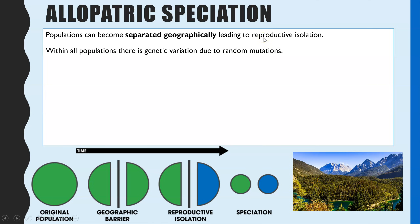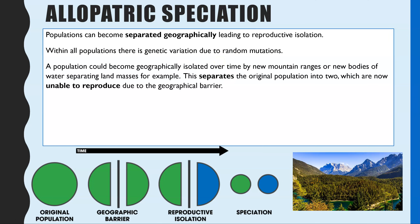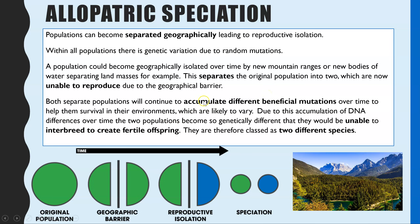Because they cannot reproduce together, within those two populations there will be random mutations constantly occurring. Because they are separated, these random mutations will only be present in their particular population. Over time they accumulate different mutations, and if they're beneficial they'll be passed on to offspring and accumulate within the entire population. Eventually over many many generations this accumulation of mutations means their DNA base sequences are now so different that they would be unable to interbreed to create fertile offspring - meaning you now have two different species.